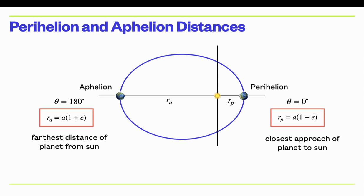So here's a summary. The point of closest approach is called perihelion. That distance is given by a times one minus e. The point where the planet is farthest from the Sun is called aphelion. And that's a times one plus e. These expressions we'll use over and over in this unit.